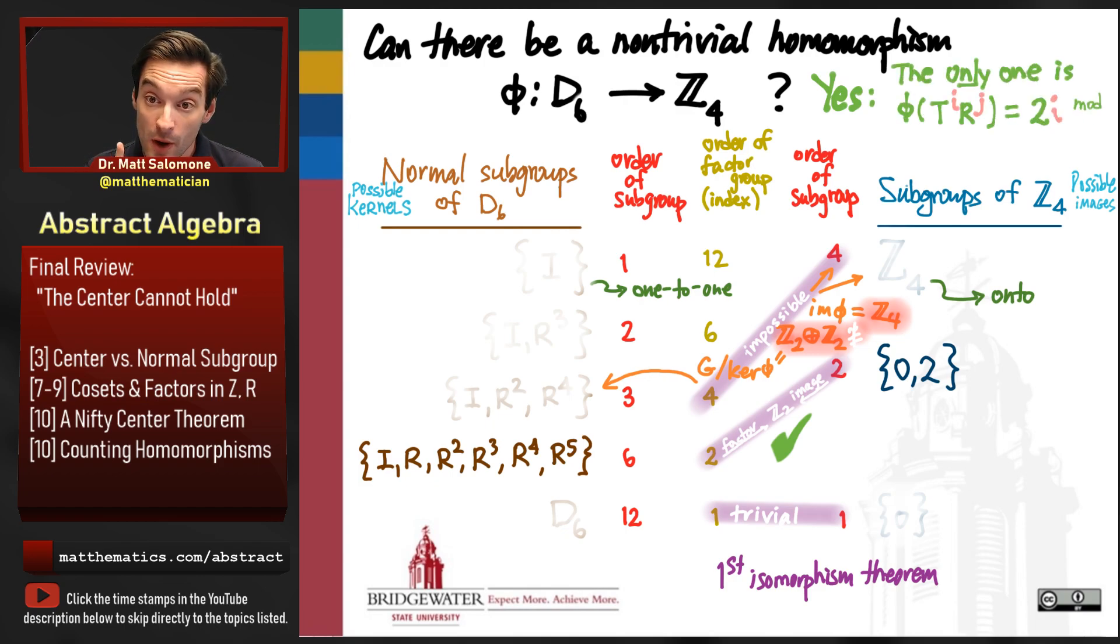So there is one and only one non-trivial homomorphism from D6 to Z4. It's the one which is going to send all of my rotations, all of my orientation-preserving symmetries of the hexagon, it's going to send those all to 0. And then it's going to send all of my reflections, the orientation-reversing symmetries of the hexagon, those are all getting sent to the number 2. So if you like, T to the I, R to the J is getting sent to 2 times I mod 4. So when I is 0, we have rotations, we're getting sent to 0. When I is 1, we have reflections, so we're getting sent to 2. So there's only one non-trivial homomorphism between these two groups. And just doing an accounting for the possible kernels and the possible images using the first isomorphism theorem by relating them to the factor groups is how we tell that story.